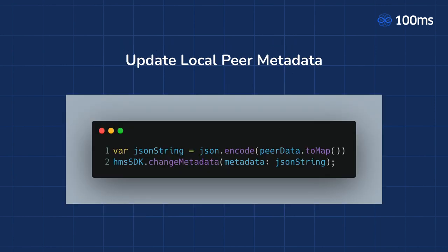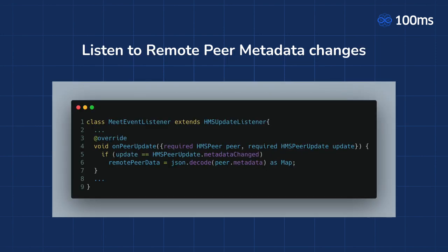Next is setting your peer metadata. First, encode the object you want to share to a JSON string, then set it as metadata by calling HMSSDK.ChangeMetaData. To listen to remote peers' metadata changes, inside the listener class we have the OnPeerUpdate method. Check if the update equals HMSPeerUpdate.MetaDataChanged, then decode the JSON string from Peer.MetaData and use it. And that's all you need to know to get started.